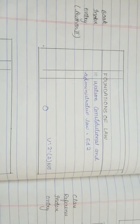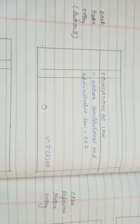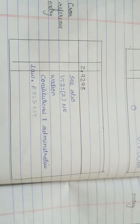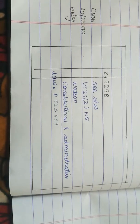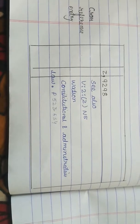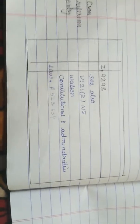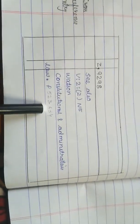Second book index entry: Foundation of Law — Watson, 'Constitution and Administrative Law', second edition, and this is our call number. Cross reference entry: we have Z 9298, see also — this is our call number — Watson and 'Constitution and Administrative Law'.